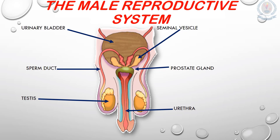What do you know about the male reproductive system? In the picture you can see the various parts of the male reproductive system. According to that picture, we can understand the reproductive system is closely associated with the urinary system in males. The main parts of the male reproductive system are: urinary bladder, seminal vesicle, sperm duct, prostate gland, testis, and the urethra.